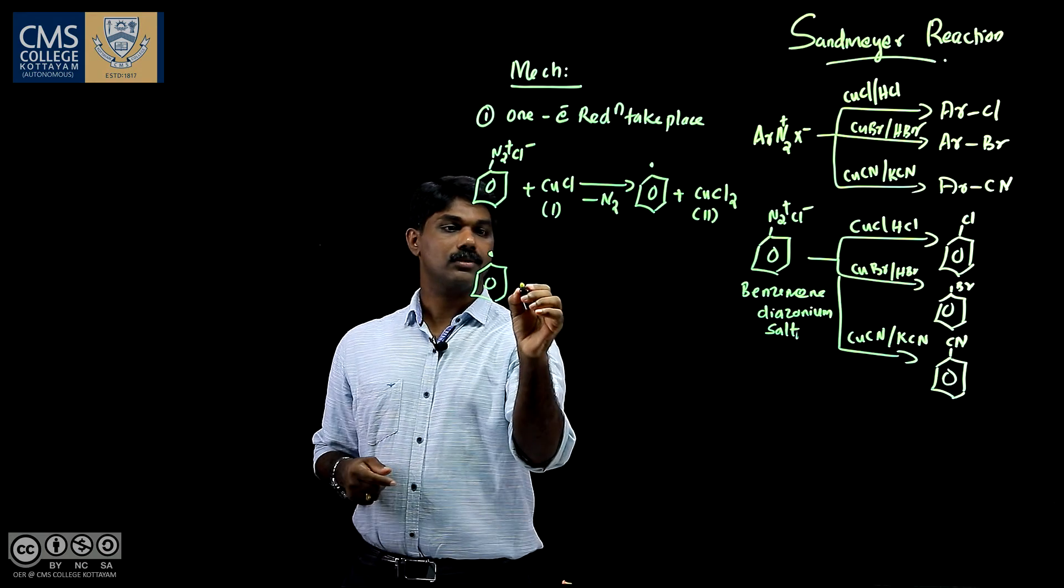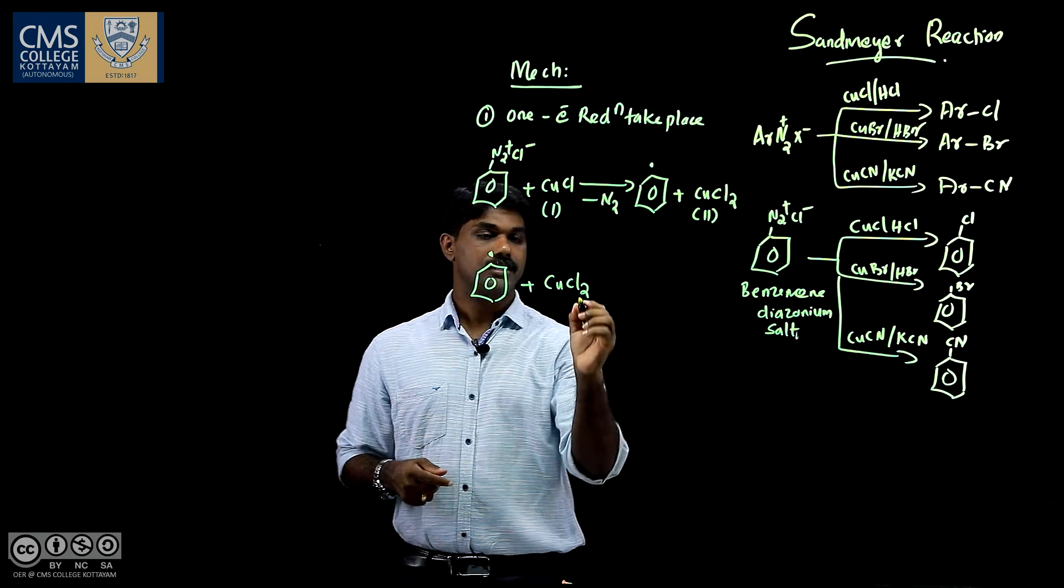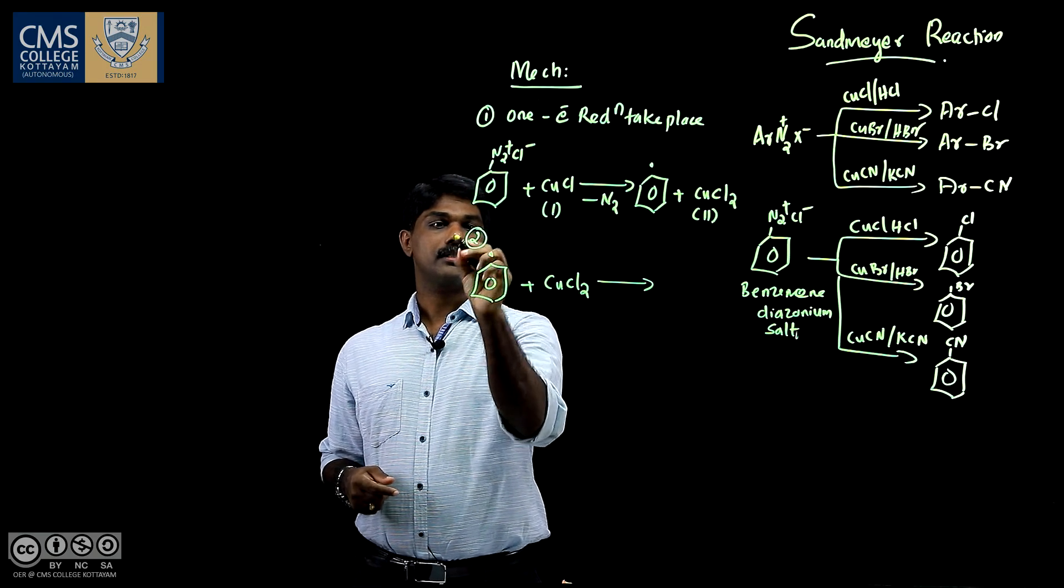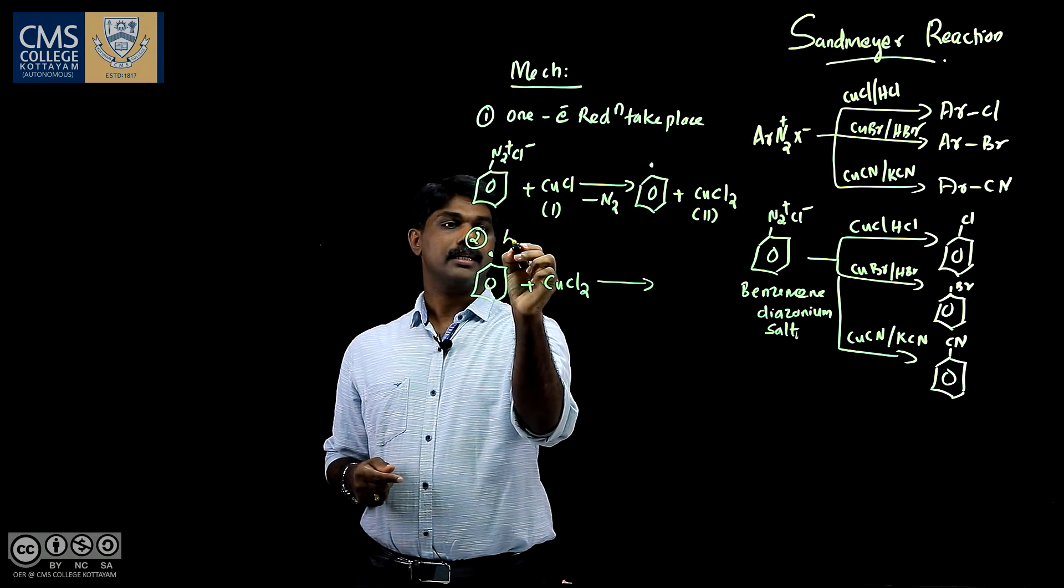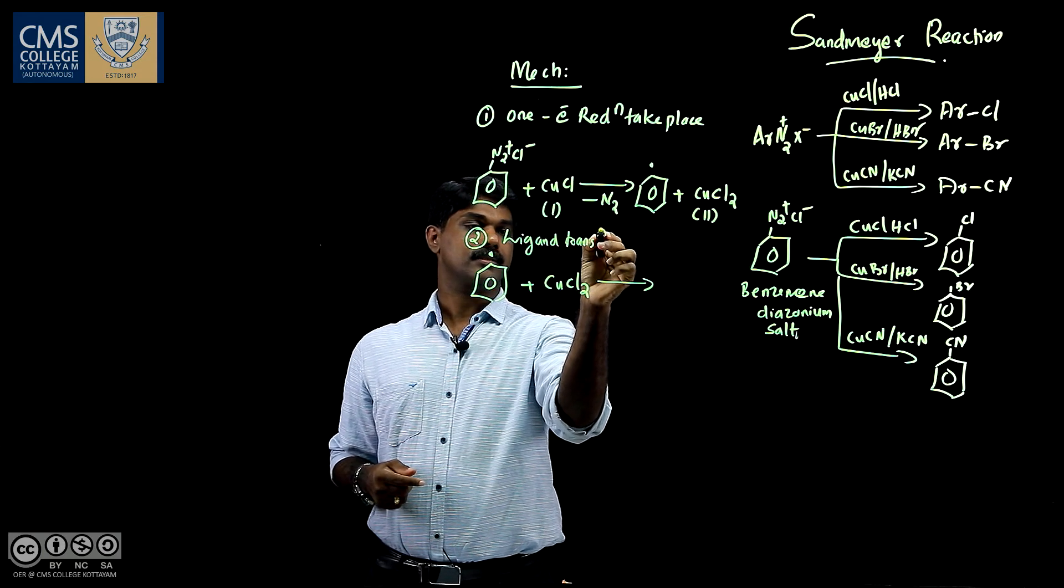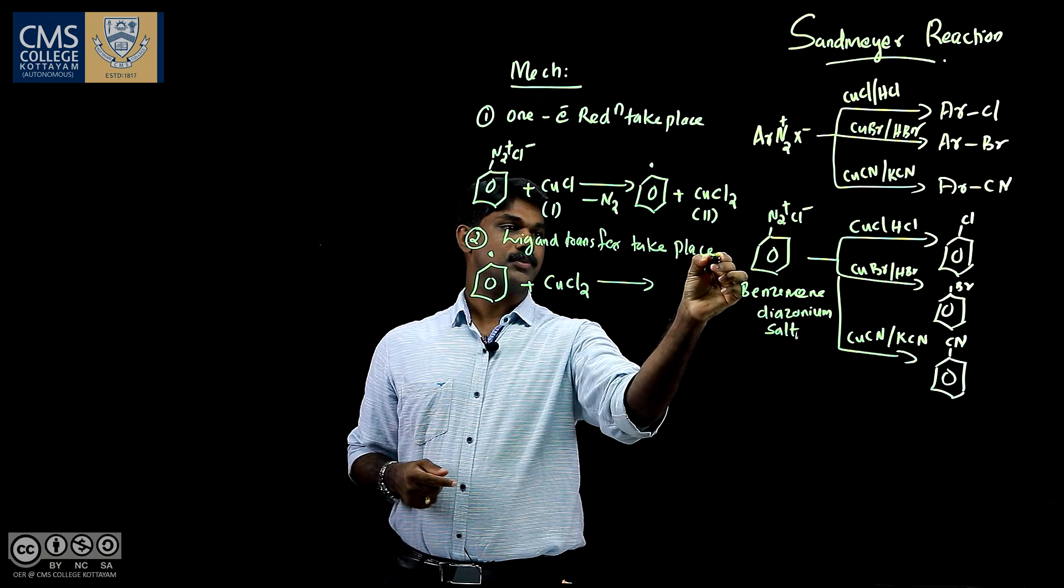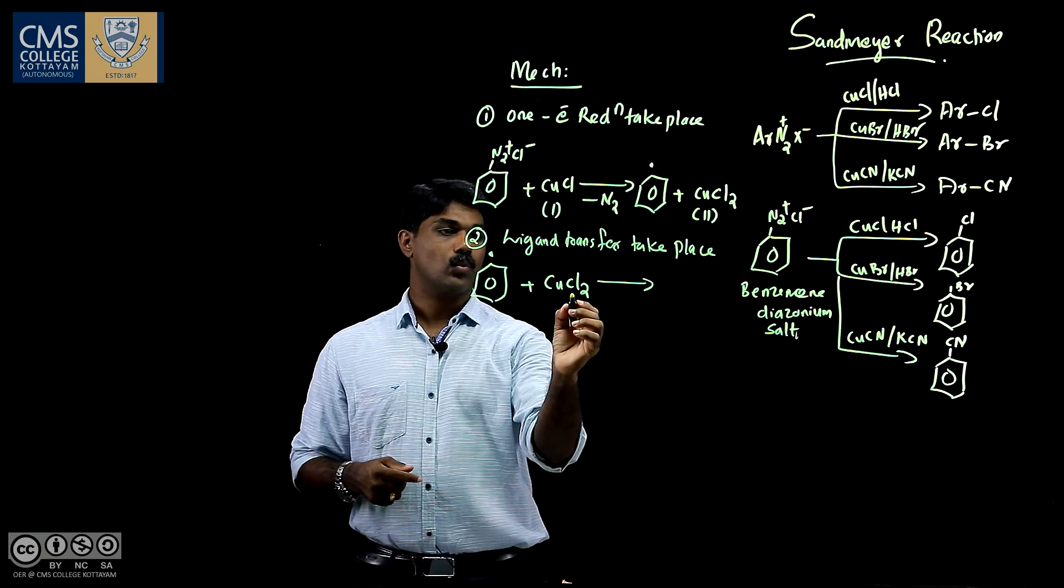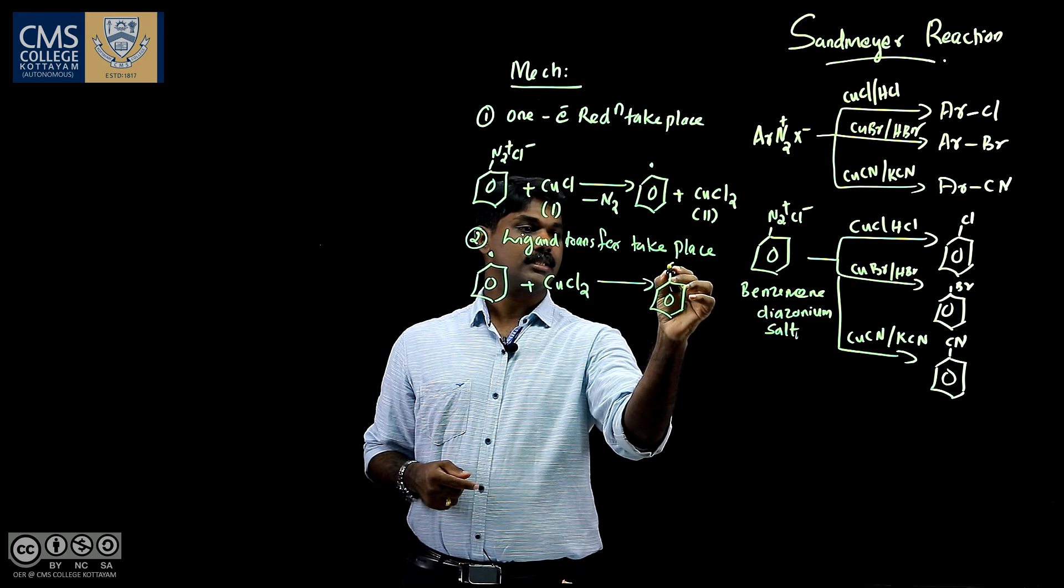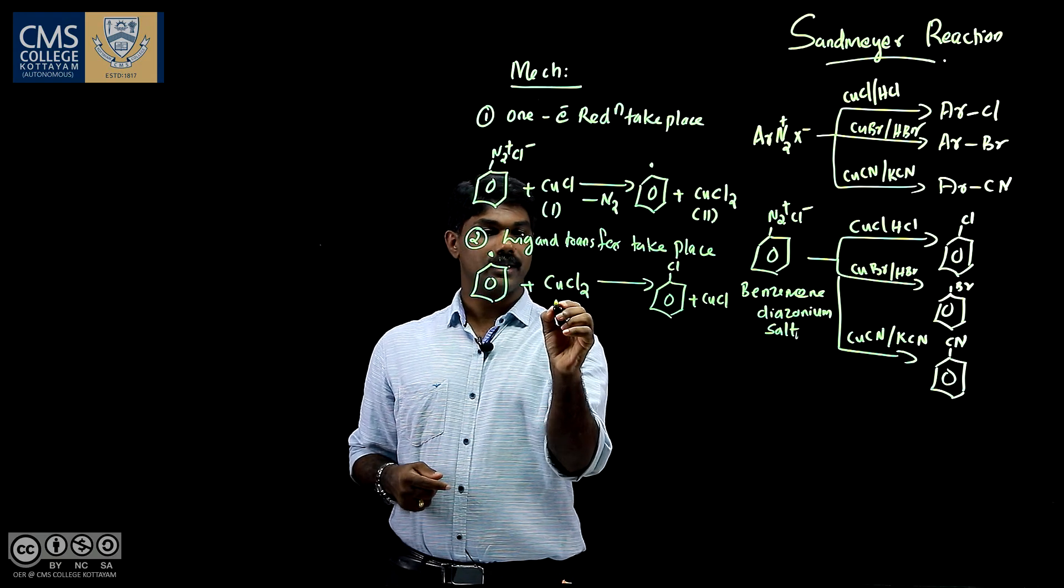And this phenyl radical is highly unstable. So it readily reacts with CuCl2. And in this step, let me write it as second step, ligand transfer takes place. Here ligand is chlorine. Ligand transfer takes place. So one chlorine gets attached to this benzene ring. And you get Cl over here plus CuCl.